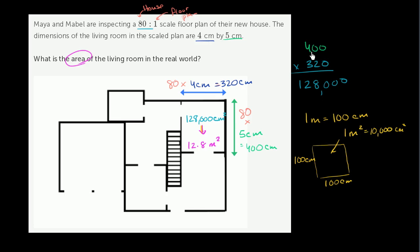Now another way you could have done it, and maybe this would have been easier, is to convert it up here. Instead of saying 400 centimeters times 320 centimeters, 400 centimeters is 4 meters and 320 centimeters is 3.2 meters. And you'd say 4 times 3.2, that is 12.8 square meters.